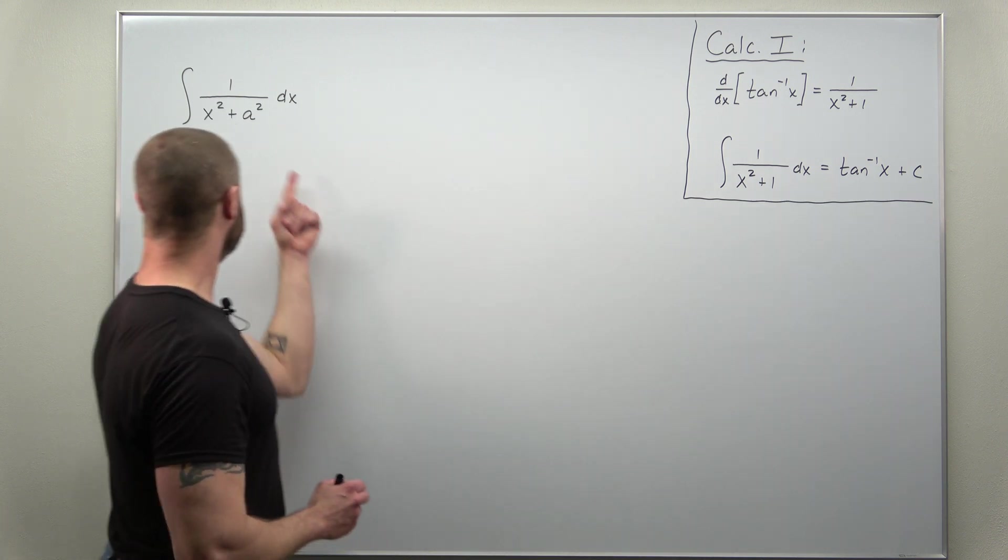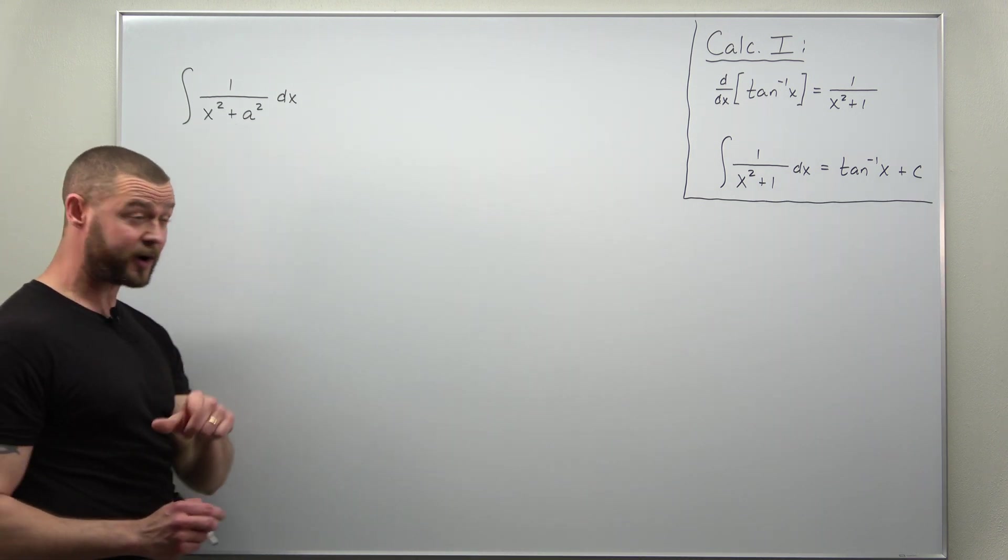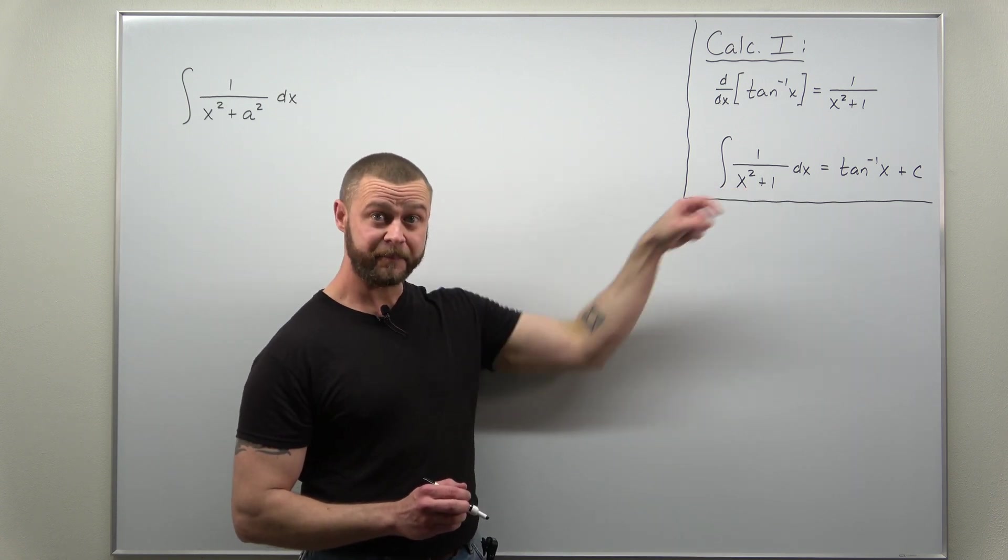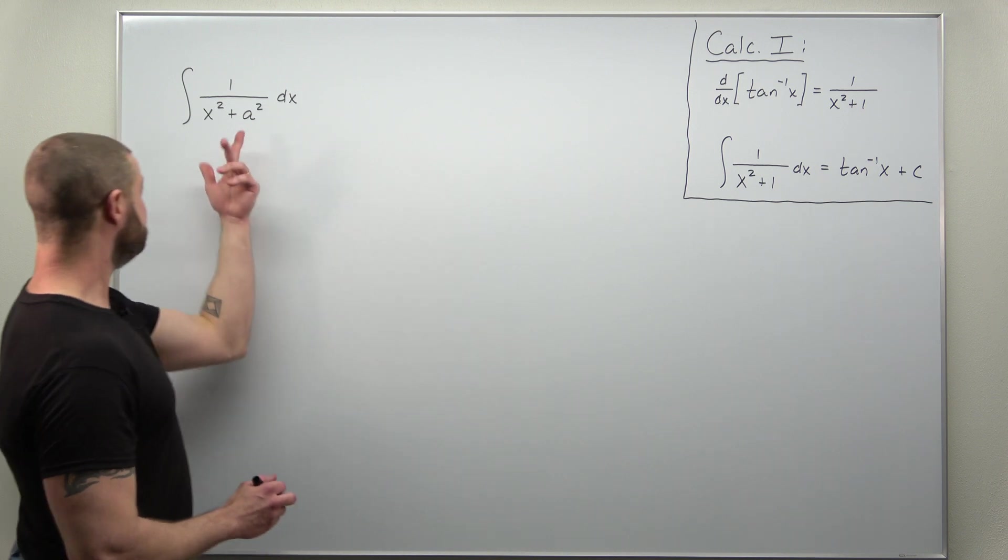Now our integral here, 1 over x squared plus a squared, looks really similar to that but there's a 1. So how do we make use of that here?